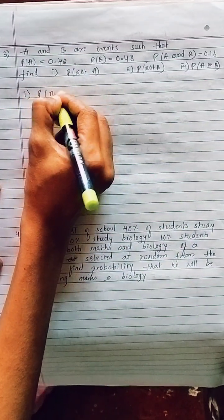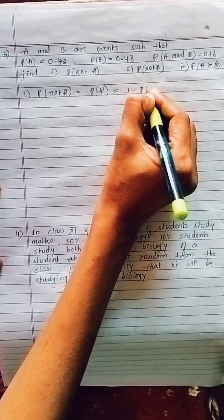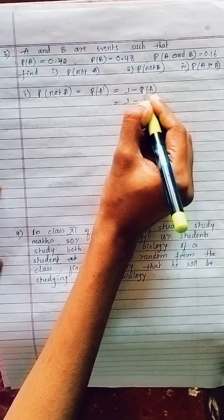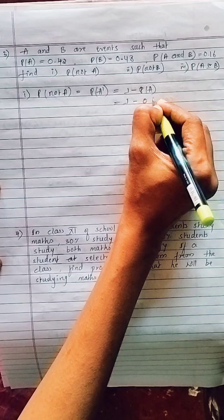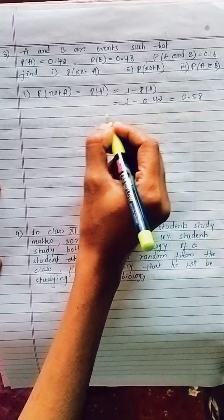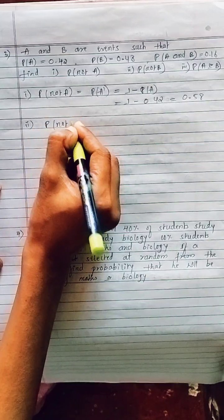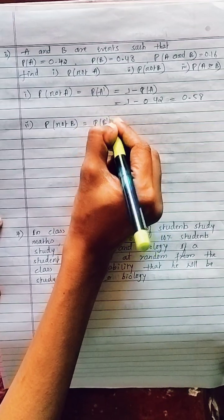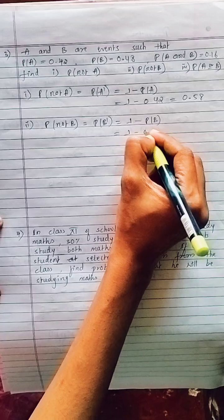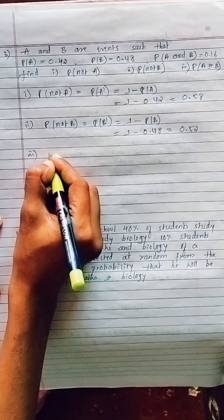First, P(not A) = complement of A = 1 − P(A) = 1 − 0.42 = 0.58. Second, P(not B) = 1 − P(B) = 1 − 0.48 = 0.52.